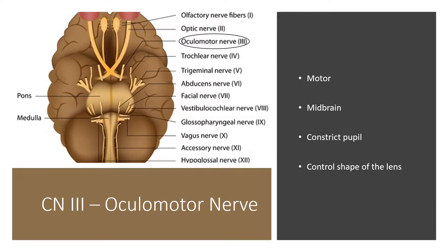Cranial nerve 3 is the oculomotor nerve. This is a motor nerve only, located in the midbrain. It is involved in functions like pupil constriction and controlling the shape of your lens. Pupil constriction is part of the parasympathetic branch of the peripheral nervous system.